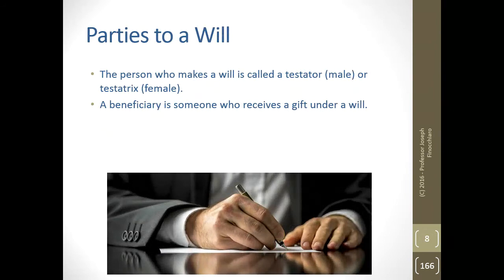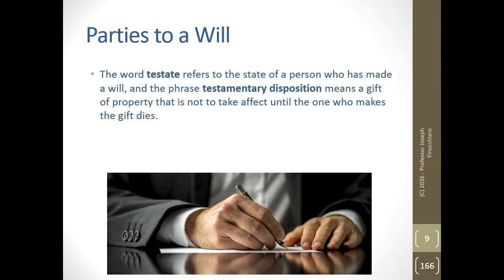The person who makes a will is called the testator or testatrix — the suffix '-or' refers to the male version and '-ix' to the female. A beneficiary is someone who receives a gift under a will. The word 'testate' refers to the state of a person who has made a will. The phrase 'testamentary disposition' means a gift of property not to take effect until the one who makes the gift dies. It's not effective until the person passes away, and then the court will hopefully enforce the instructions and the gift if the will is valid.